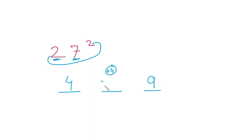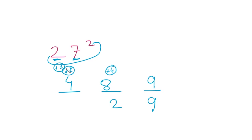Now let's add: nine, eight plus four is 12, so write two and carry one. Then four plus two plus one gives seven. So 729 is our answer. I hope you liked the video — make sure you share it with people who need it. Have a great day!